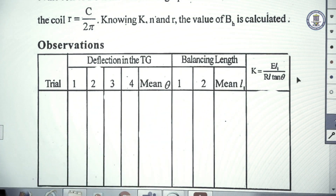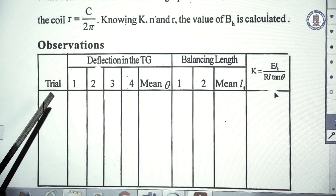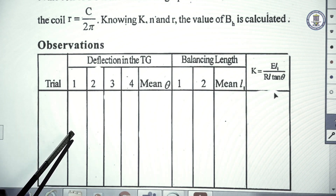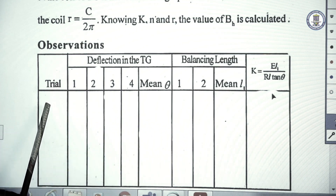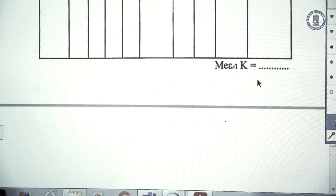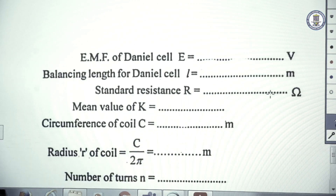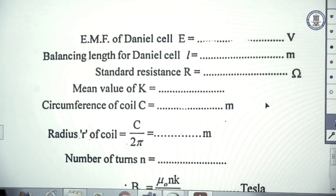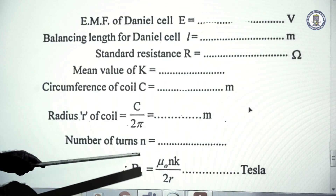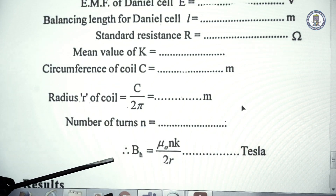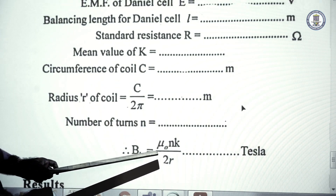K is determined using the formula E·L1 / (R·L·tan(θ)). The experiment is repeated for another position of the rheostat, deflections and balance lengths are noted, and the mean value of K is found. From the circumference C, the radius is obtained, and BH = μ₀·N·K / 2R is also determined.